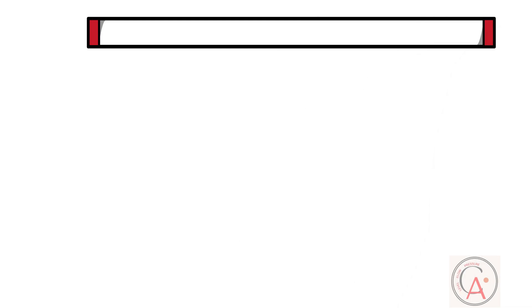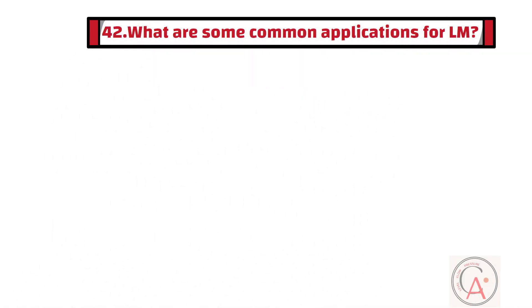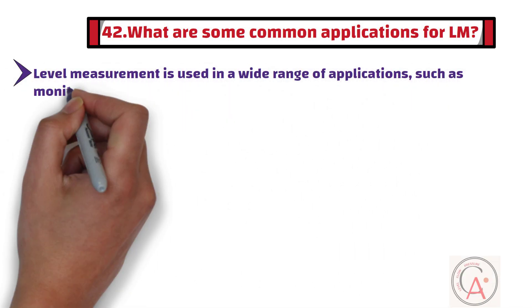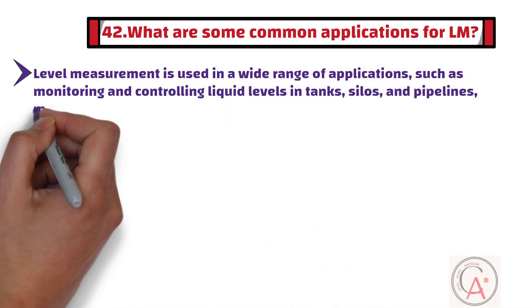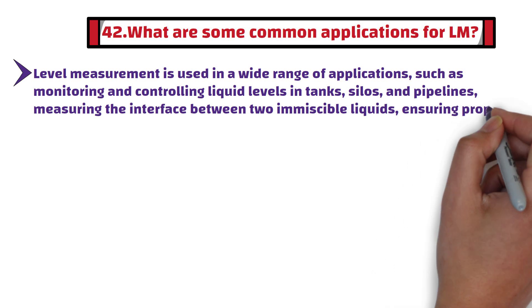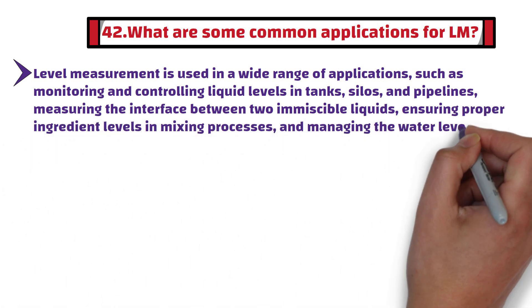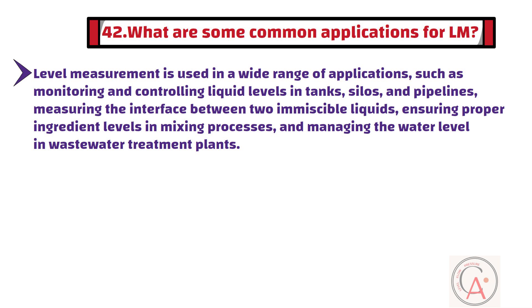Question 42: What are some common applications for level measurement? Level measurement is used in a wide range of applications, such as monitoring and controlling liquid levels in tanks, silos, and pipelines, measuring the interface between two immiscible liquids, ensuring proper ingredient levels in mixing processes, and managing water levels in wastewater treatment plants.